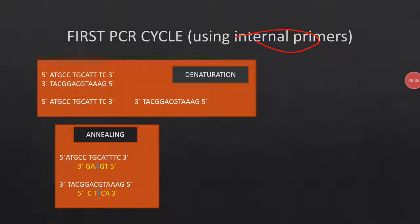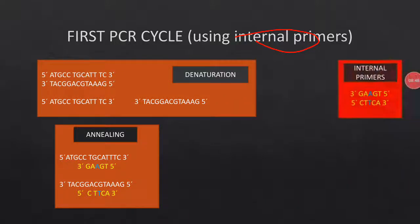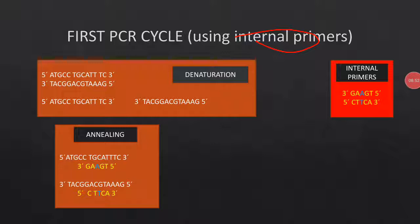In the second step — annealing — internal primers bind to the DNA template at internal sites, not at the edges. Since I want to change G to T, I design primers that are complementary to the desired final sequence: one primer reads 5'-GAAGT-3' and the second is 5'-CTTCA-3'. The direction of the primer is opposite to that of the parent strand. Then extension proceeds.